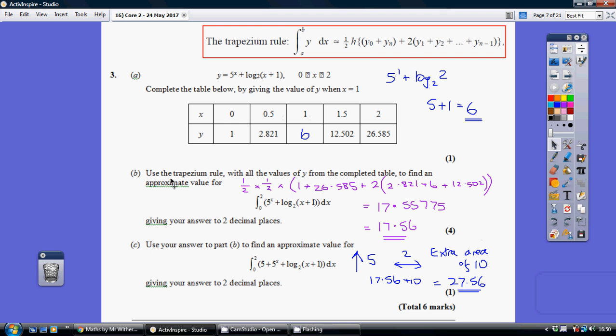Now, for part B, using the trapezium rule, we're given the trapezium rule in the formula sheet. So it's a half times H. H is just the class interval here. We're just going up by 0.5 each time. So half times a half.